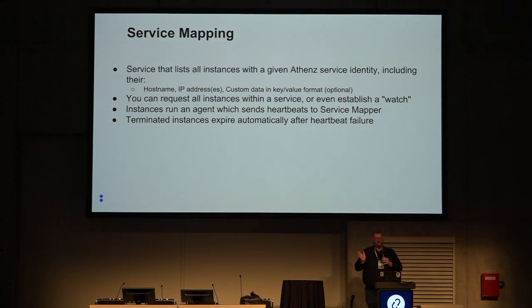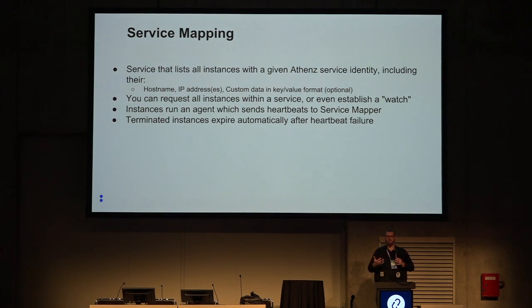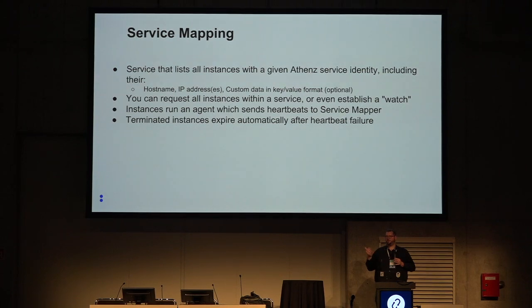Let me step to the side here to set up the next section. You have all your identity: your instances all have unique identities, your user has an identity to talk to OpenStack. But how do you understand the grouping of all these instances? How do you say 'I have a service like Yahoo Mail — what are all the servers that comprise it?' We have something called Service Mapper. You run an agent on your instances; that agent heartbeats using mutual TLS, so the act of connecting over mutual TLS causes it to identify itself. It sends its heartbeat, which includes metadata like IP address and hostname.